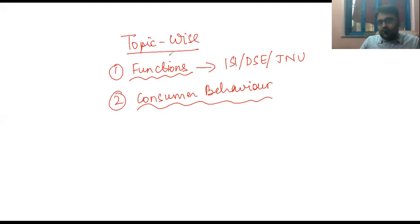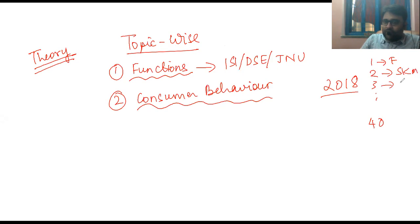The reason why we go topic-wise is it's quite easy to solve ISI, DSC, and JNU problems when the theory is fresh in your mind. If we go year-wise, like first we do year 2018, we have one, two, three, up till 40 problems from a particular year.